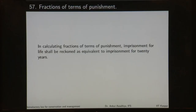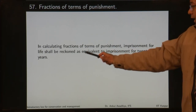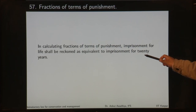Section 57 — fractions of terms of punishment. In calculating fractions of terms of punishment, imprisonment for life shall be reckoned as equivalent to imprisonment for 20 years. So if a court says we are not going to give life imprisonment but the person should be given half of life imprisonment, that half is determined using this section — imprisonment for life equals 20 years, so half is 10 years.